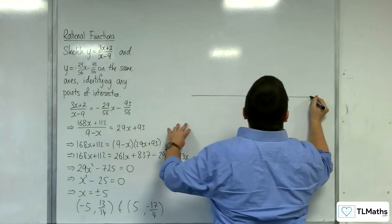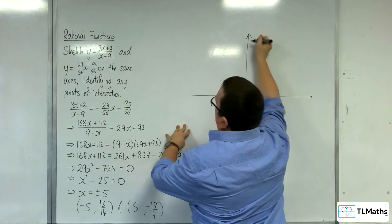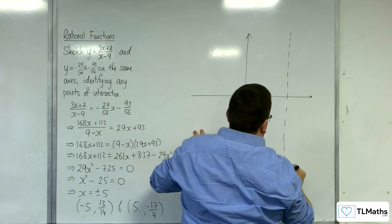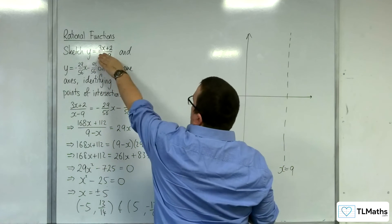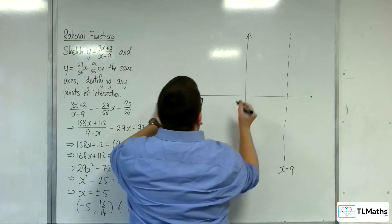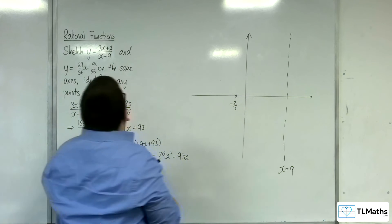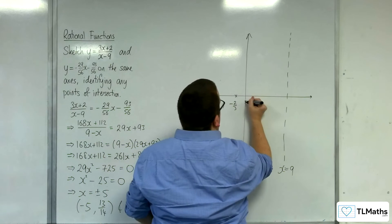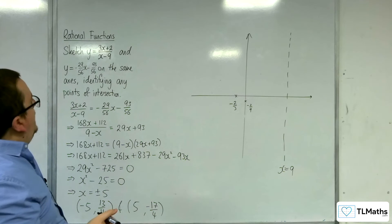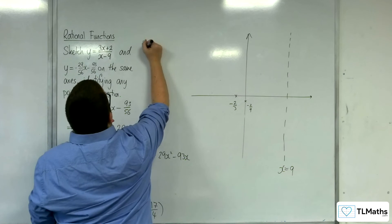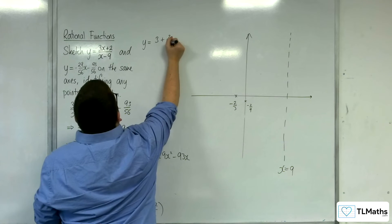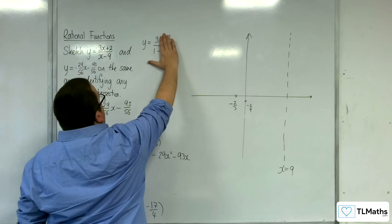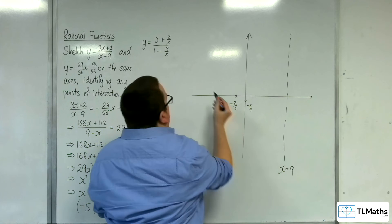Now for the sketch. So the denominator is 0 when x is 9. The numerator is 0 at minus 2 thirds. That's where it's crossing the x axis. And when x is 0, y is minus 2 ninths. And the horizontal asymptote, divide top and bottom by x. So 3 plus 2 over x over 1 take away 9 over x. So as x tends to infinity in the other direction, we're going to get y equals 3 over 1. So y equals 3.